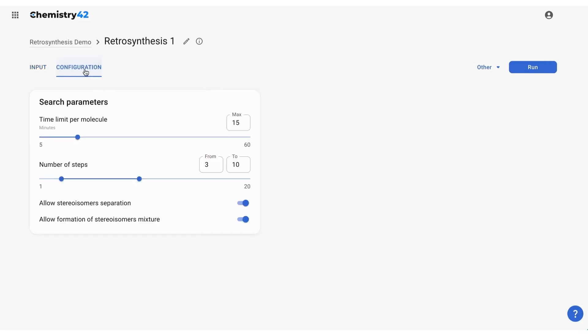On the Configuration tab, you can change parameters such as the time limit per molecule, the number of steps in the synthetic scheme, and the ability to separate stereoisomers. Set a name for your experiment. Then, press Run to start the analysis.